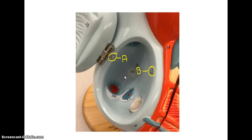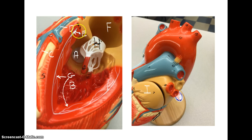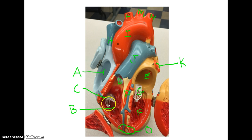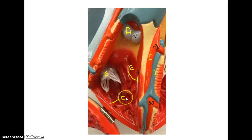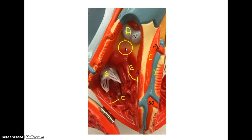Looking at the conduction system of the heart: this picture shows the right atrium, where you have the SA node — the pacemaker of the heart — and the AV node. You can also see the left bundle branch, and the right bundle branch on the right side of the heart, along with the tricuspid valve and pulmonary semilunar valve. The Purkinje fibers come off the bundle branch structures.